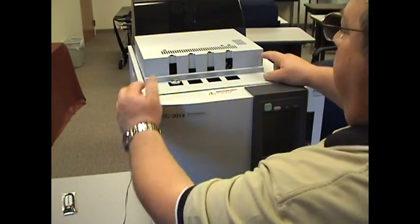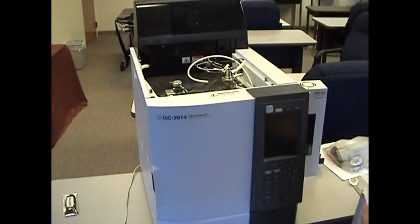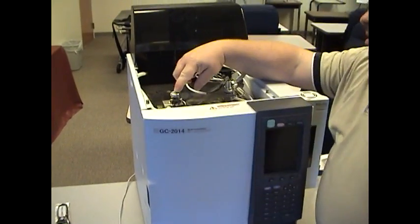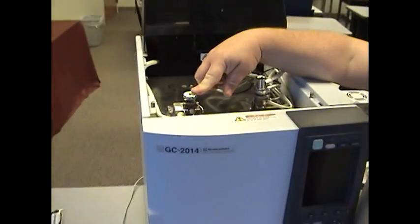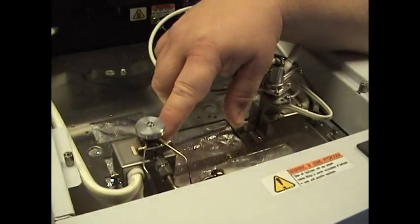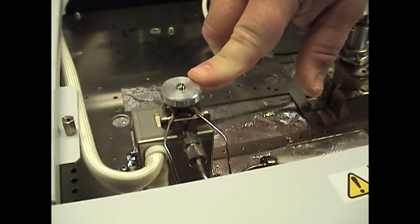Next thing we do, remove the lid, and that will expose the top of the GC. Right here is where the port is, the injection port. Contained in here will be your SEPTA and your injection liner. Make sure this is cool before you begin any kind of work.